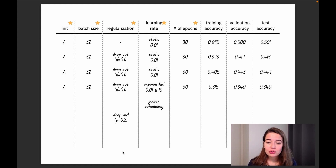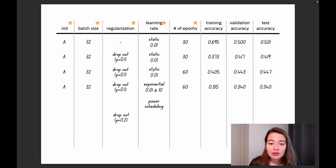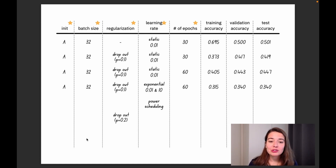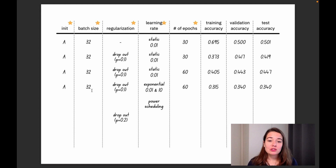For the last two experiments, you can try anything you want — maybe increase the number of epochs to 100 if your computer is fast enough, try different learning rate scheduling, different static learning rates, different regularization techniques, or increase or decrease the batch size. But try to change only one thing at a time so you can really understand the effect of what you're changing. That's your assignment — I'll also note it down in the next section. Now let's move on to initialization techniques.